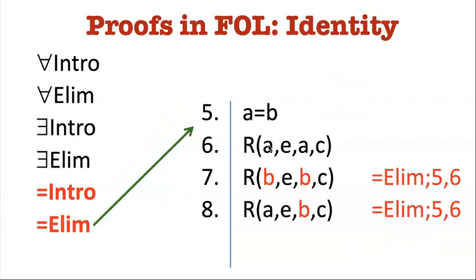Well, what if the identity, what if the A letter appeared in multiple argument places in the same formula? You're allowed to do one or more substitutions. Any of them are valid, of course. Since these are two names for the same object, you can put in B for one of the A's or all of the A's or whatever you want.